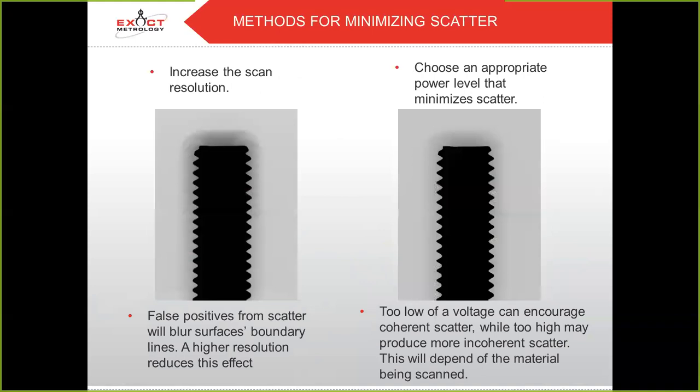Fortunately, there are methods for minimizing scatter. Here we have two x-ray images of the same steel bolt. On the left, you can see a cloud of false positives resulting from scatter. But since we are zoomed very close into the part, we still have a relatively clear view of the boundary line between the metal and the false positives. On the right, we can see that choosing an appropriate power level will further reduce scatter. In this case, power was increased to reduce the percentage of coherent scatter of the total attenuation.